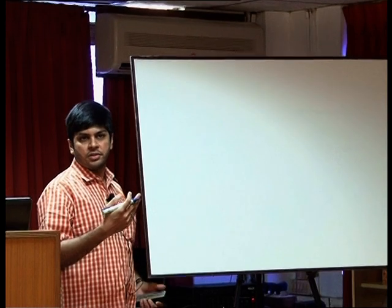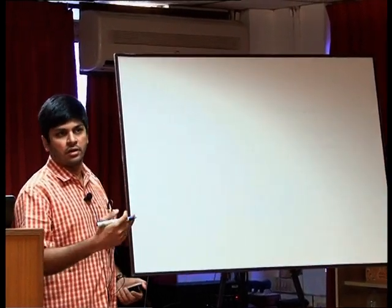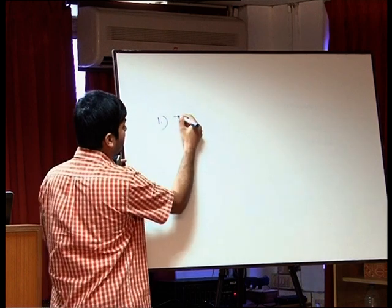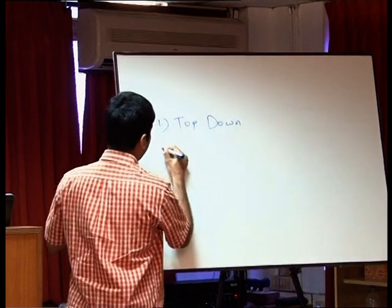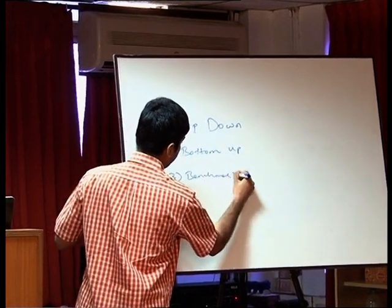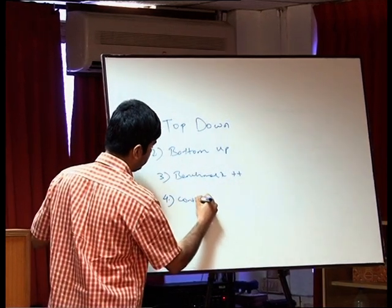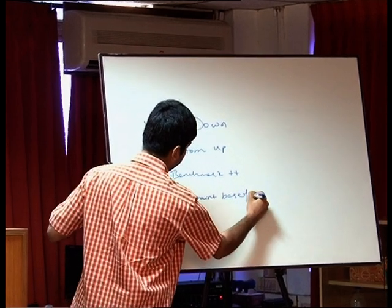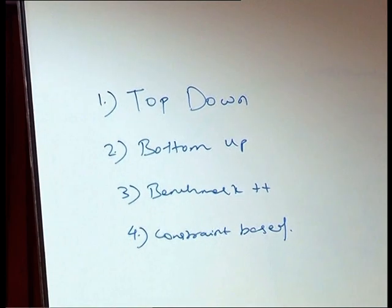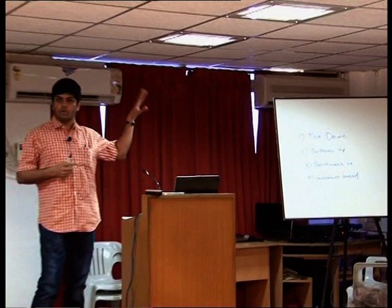These are the broad facets of portfolio construction. After the textbook definition, there are about 3 to 4 ways in which a portfolio is constructed. I am sticking to equities here — I am not a bond expert, I just know the basics. So there are 4 methods: top down, bottom up, benchmark plus, and constraint based. These are the 4 general ways in which a particular equity portfolio is constructed.